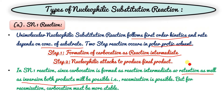If retention and inversion both occur, that means racemization is possible. For racemization, the carbocation must be stable — carbocation should be stable, then only it will form.